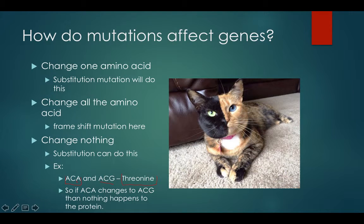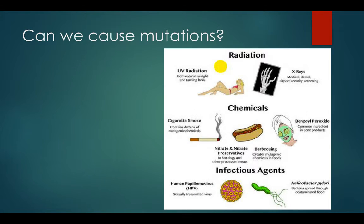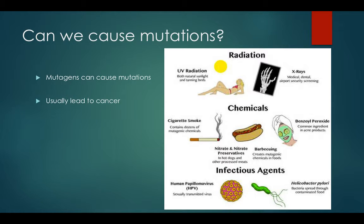Here's another example of a mutant cat — mutations and all that. So what can cause mutations? The main way is through something called a mutagen. A mutagen is going to cause lots of mutations, and they're usually really bad because they lead to cancer in the long run. Cancer is actually caused by mutations — mutations in your cells turn off proteins and turn off genes. Most mutations are harmful, and in general a mutation is going to be very damaging.